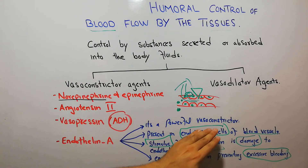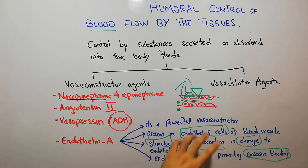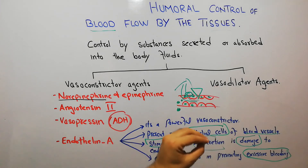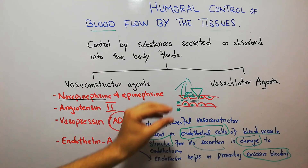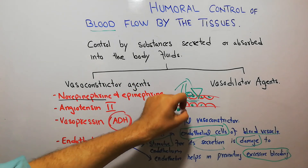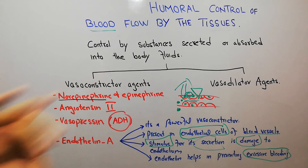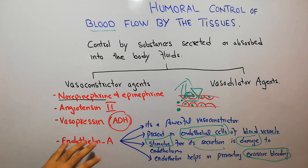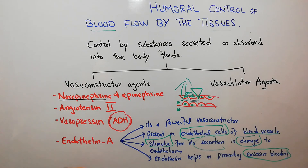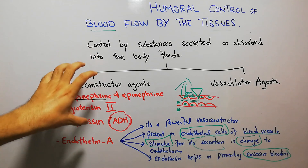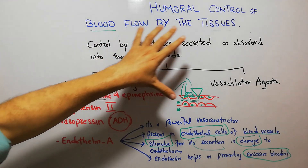In summary, endothelin A is a powerful vasoconstrictor agent present in the endothelial cells. It is secreted when endothelial cells are damaged due to stress, trauma, or chemicals, and it helps in constriction of the blood vessels, preventing excessive bleeding from them. That concludes the discussion of endothelin A and all the vasoconstrictor agents which cause vasoconstriction and maintain blood flow to the tissues.